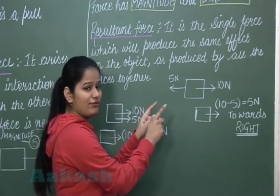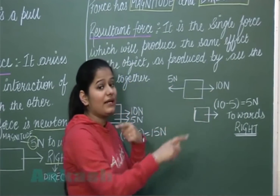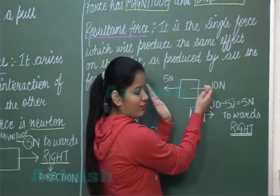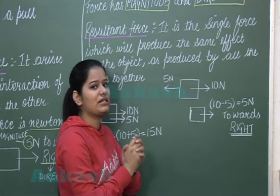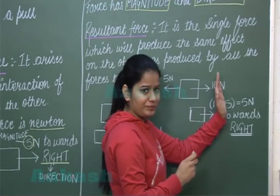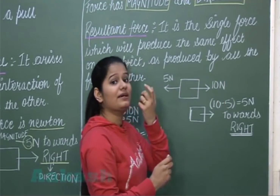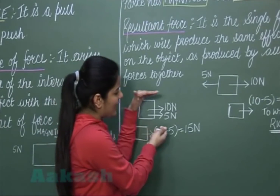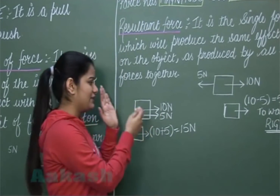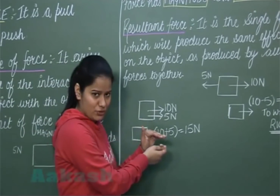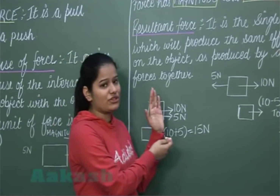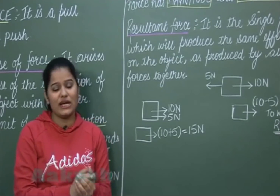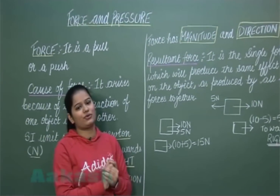If forces act in opposite directions, the resultant force is the difference of the forces, and its direction is along the force with greater magnitude. If two forces act in the same direction, the resultant force is the sum of the forces, and its direction remains the same as the individual forces. Now let's discuss the effects that a force can produce.